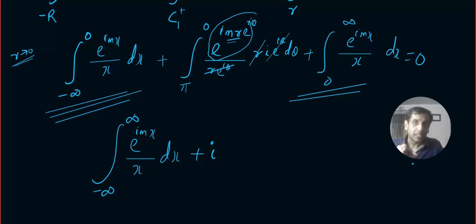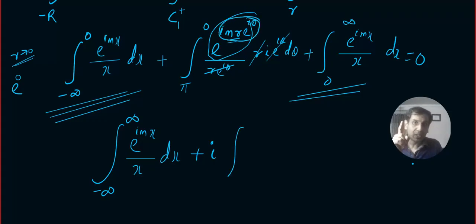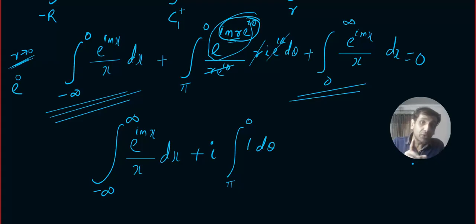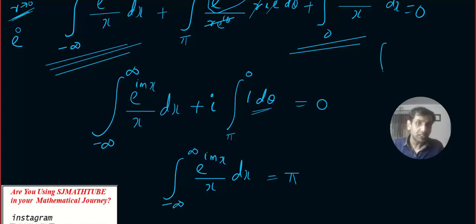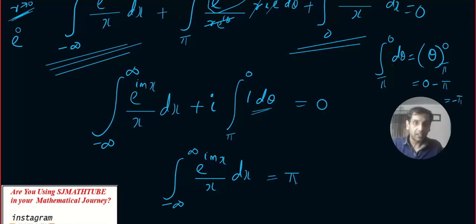As ρ→0, this part is negligible and e^(im·ρe^(iθ)) tends to e^0 = 1. So we get integral from π to 0 of i·dθ, which equals zero on the other side. The integration of dθ is θ evaluated from π to 0: upper limit minus lower limit gives −π. Multiplied by i, this gives −iπ, so the small circle contributes −iπ to the equation.